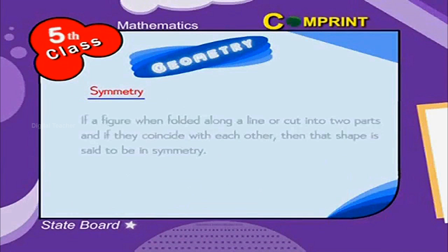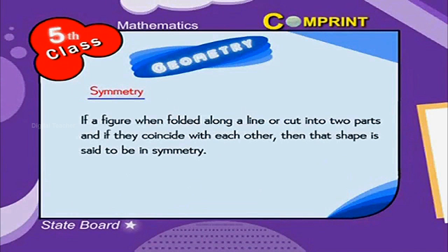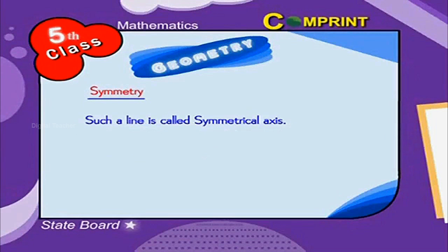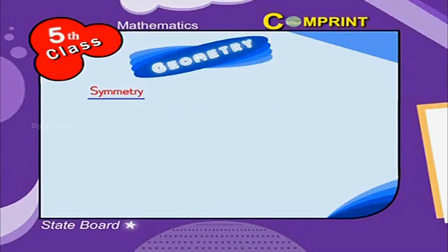Symmetry: If a figure when folded along a line or cut into two parts and if they coincide with each other, then that shape is said to be in symmetry. Such a line is called symmetrical axis. Look at the examples.